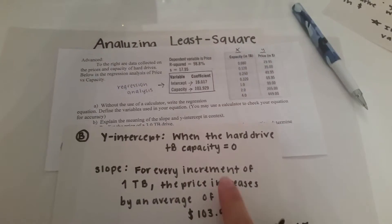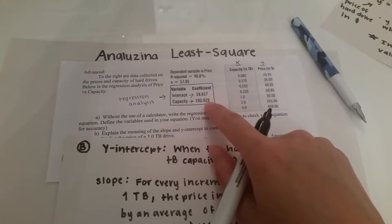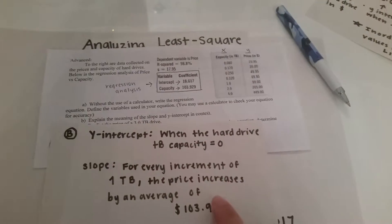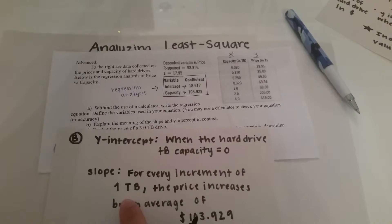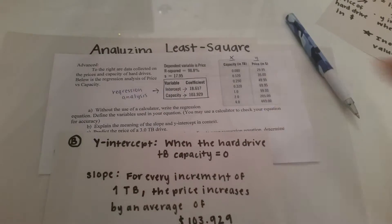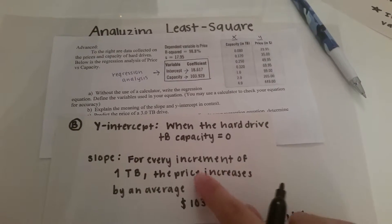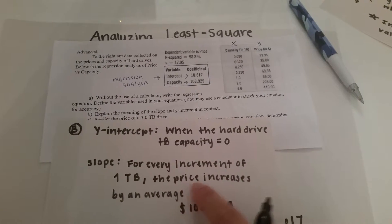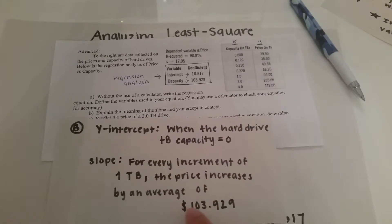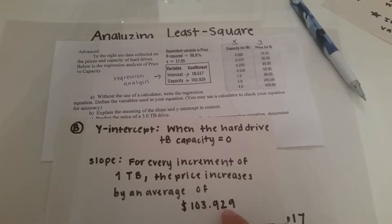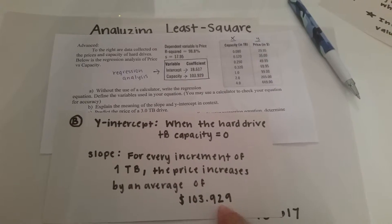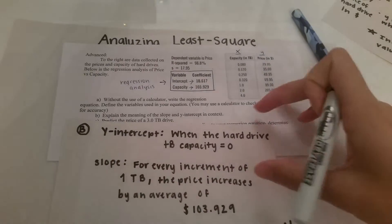Now for the slope, the slope is 103.929 it just means that for every increment of one TB that you input into x the price y hat increases by an average of 103.929 dollars and remember to talk about everything in context related to the price and the capacity.